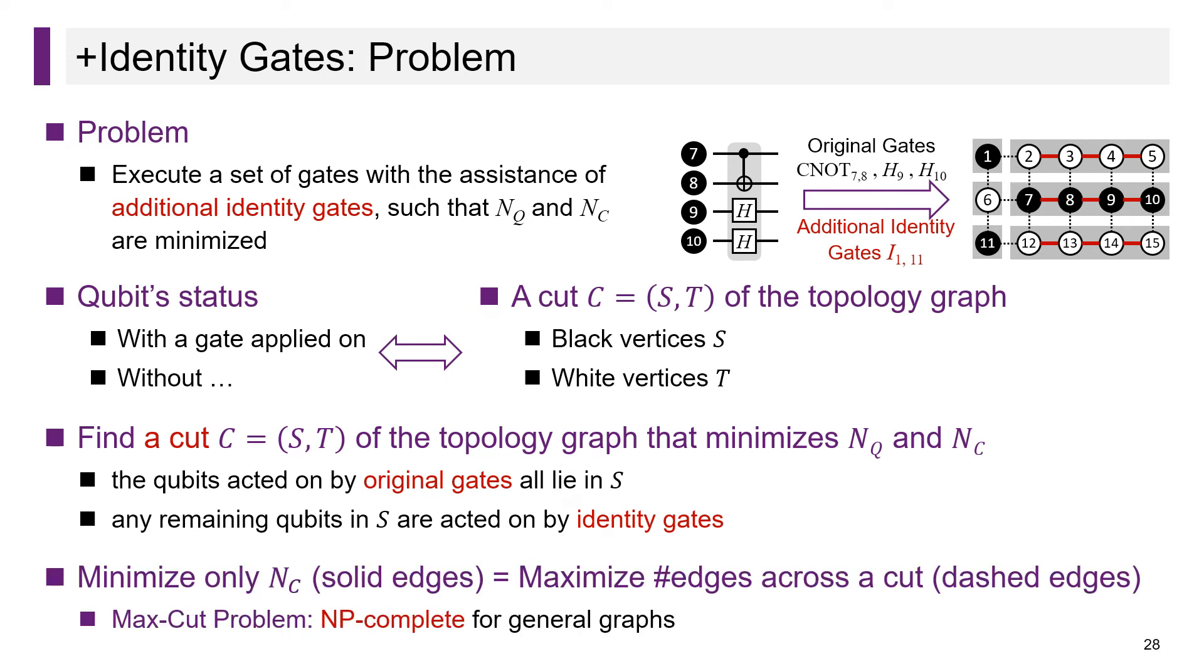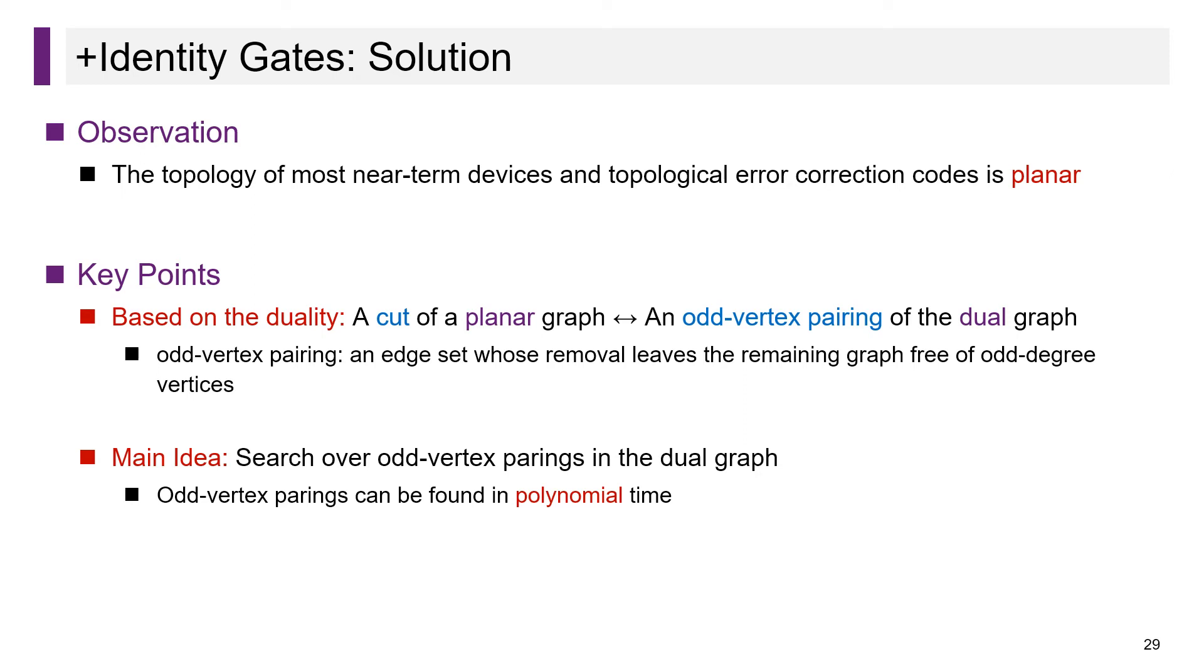It is hard to find such a cut, as minimizing only N_c, i.e. the number of solid edges, is equivalent to maximizing the number of edges across a cut, i.e. the number of dashed edges. This is the max-cut problem and is NP-complete for general graphs. Fortunately, the topology on most near-term devices and topological error correction codes is planar. It is reasonable and meaningful to design a solution that targets planar topologies. And on planar topologies, we can further exploit the duality between a cut and an odd-vertex pairing of the dual graph. To find the desired cut, we can search over odd-vertex pairings, which can be done in polynomial time. We omit the details here.